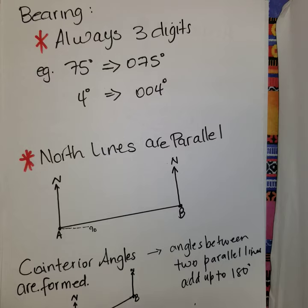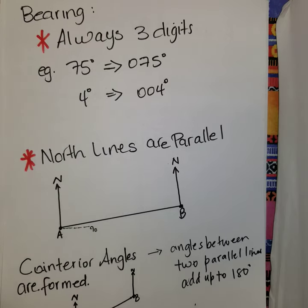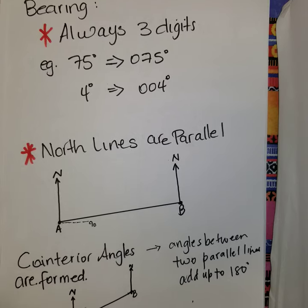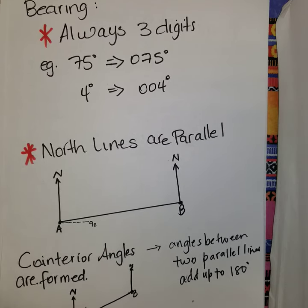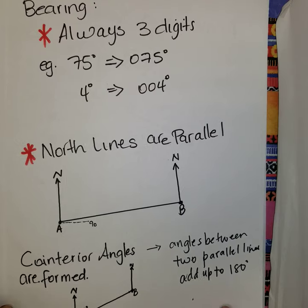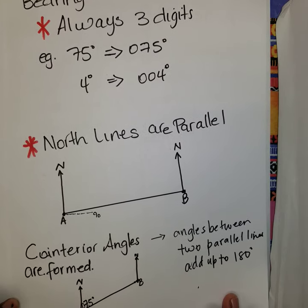We also need to know that bearings have three digits. So if you see 75 degrees on your diagram, you need to write 075. If you see an angle of 4 degrees, you need to write 004 degrees for your bearing.